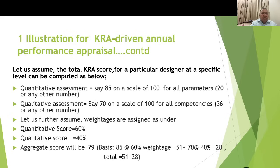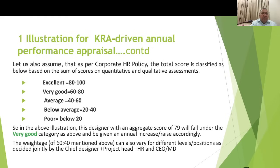Based on corporate or HR policy, the score classification may be: excellent 80–100, very good 60–80, average 40–60, below average 20–40, and poor below 20. In this illustration with a score of 79, the person qualifies under the very good category and is to be given the corresponding raise or benefits. The weightage of 60 to 40 can also vary for different levels and positions as decided jointly by the chief designer, project head, HR, and the COMD.